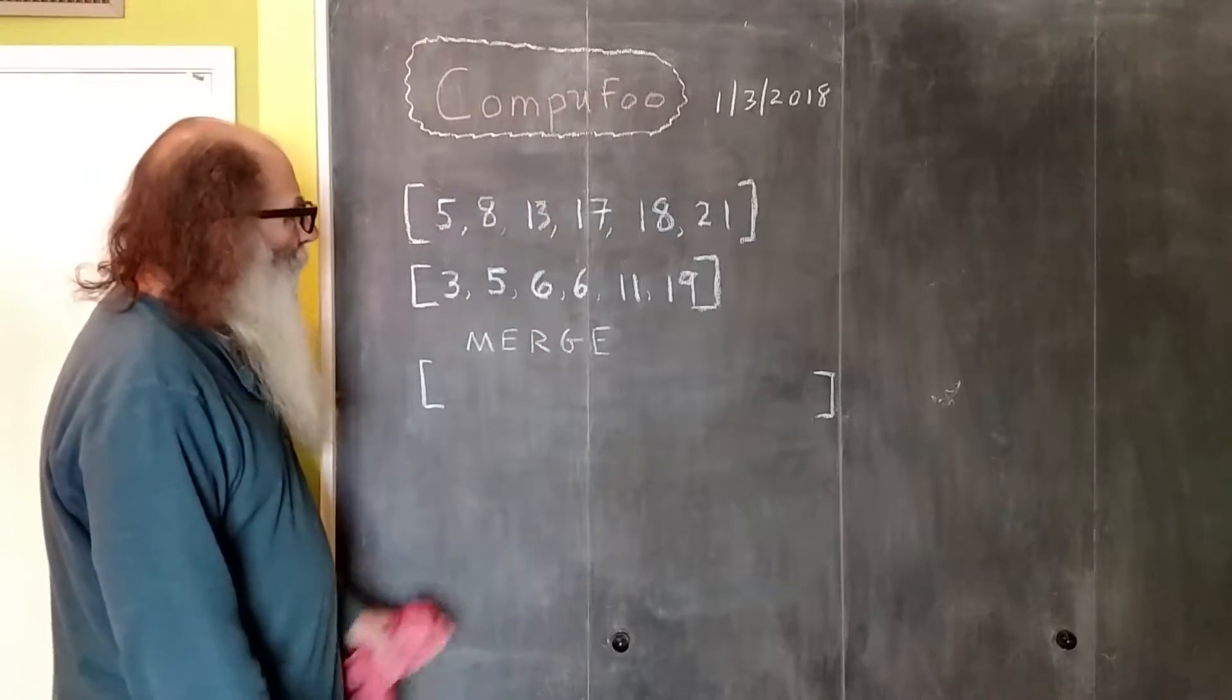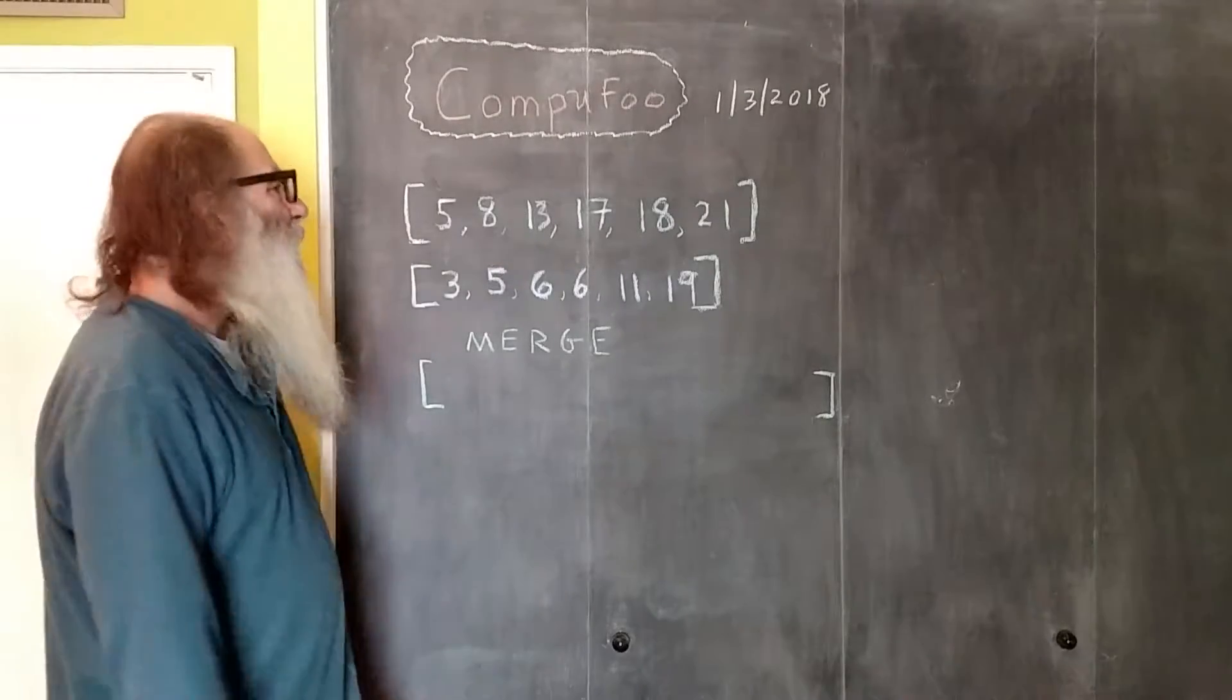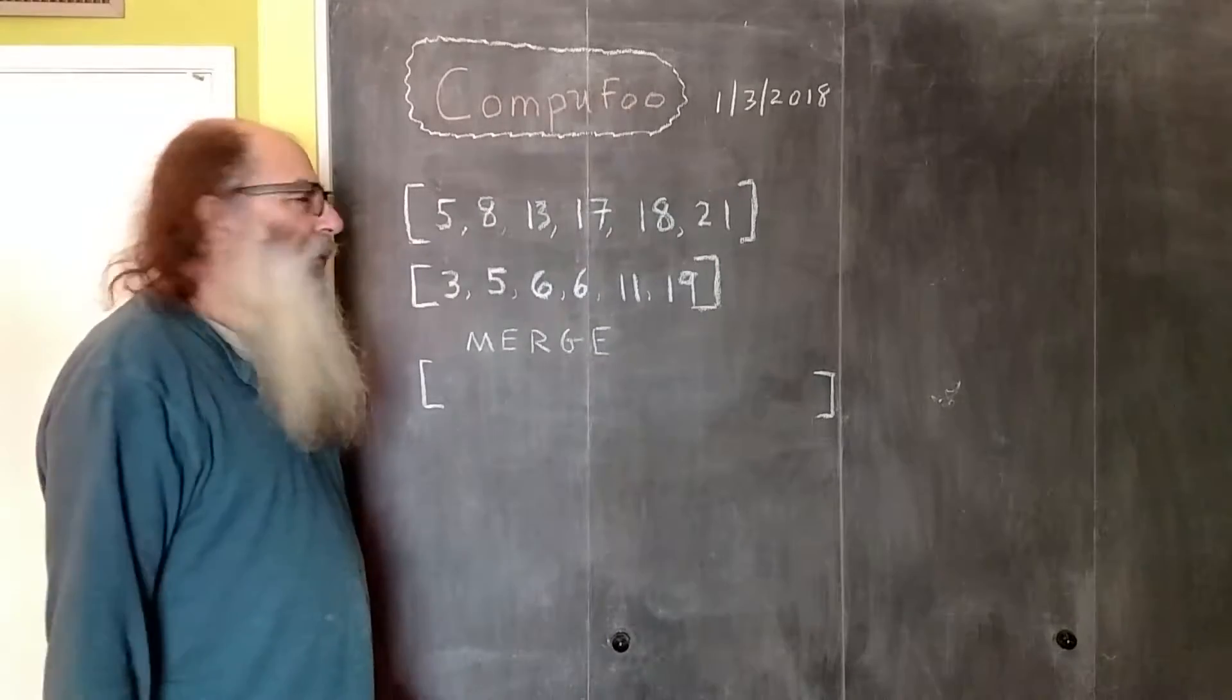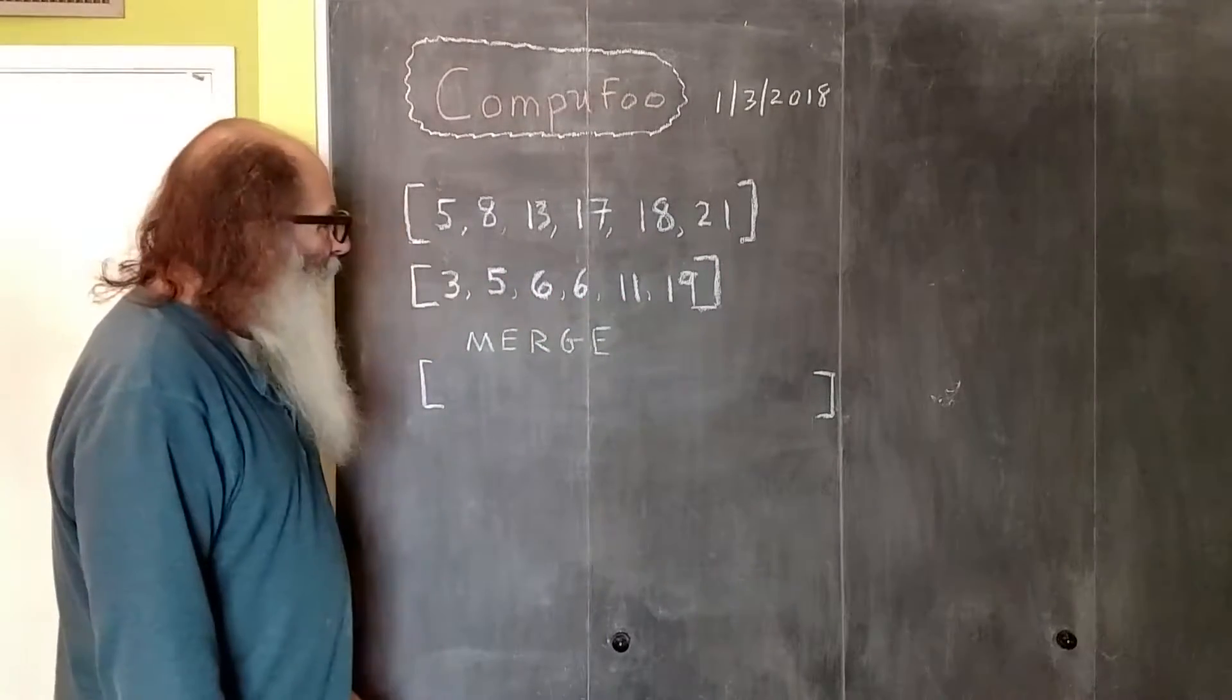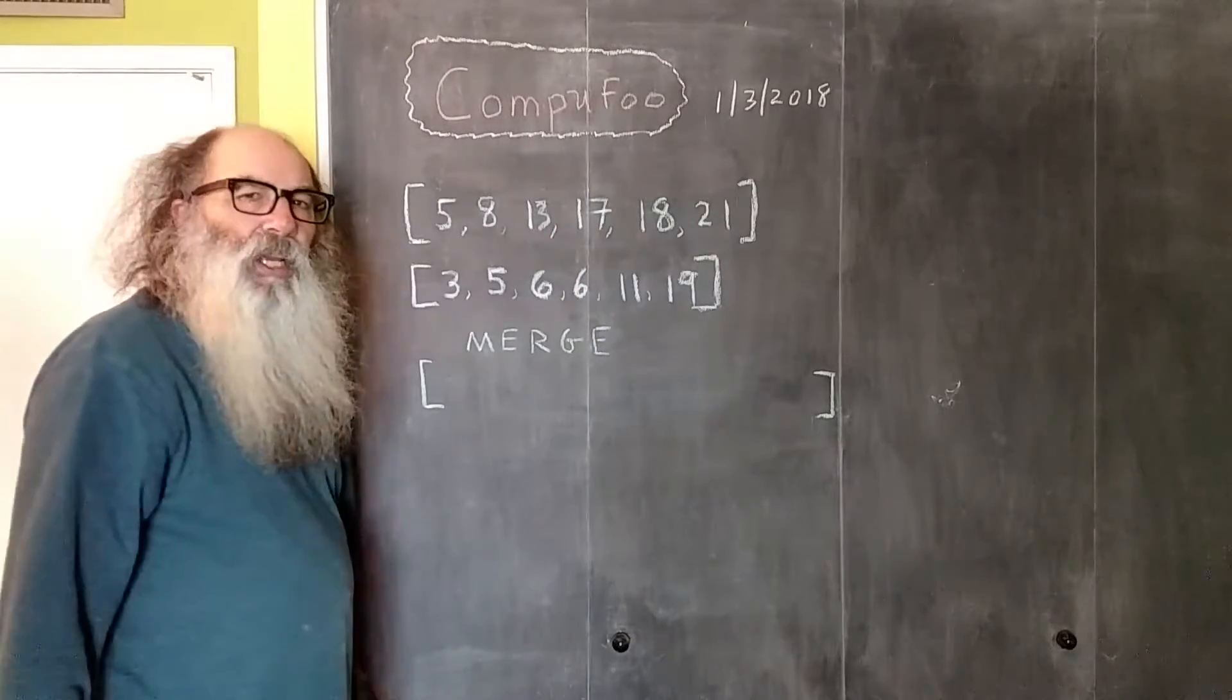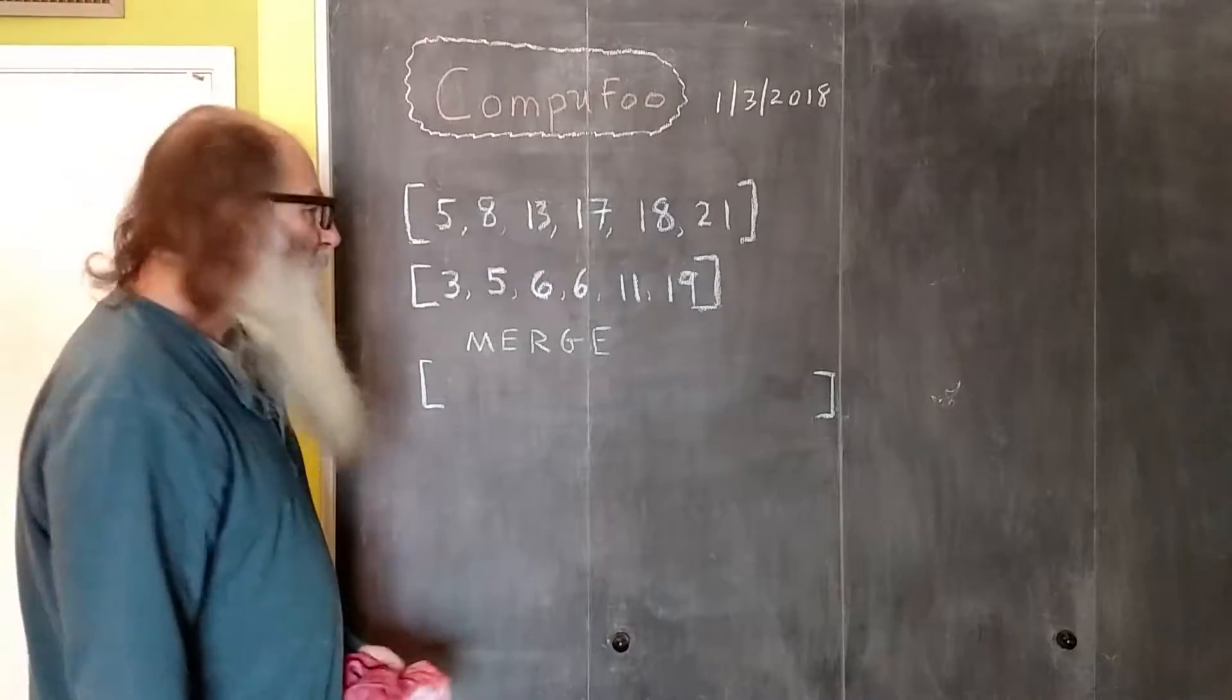So we're going to demonstrate the merge aspect of merge sort. I have two arrays here that are sorted in ascending order, smallest to largest, and we want to end up with a third array that's going to be these two arrays merged together in ascending order. And here is an algorithm for doing that.